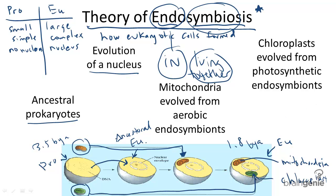Therefore, mitochondria and chloroplasts are considered to be modern day endosymbionts of what were originally thriving cells. The fact that they also have ribosomes and DNA similar to prokaryotic cells, and that they reproduce by fission independently from the rest of your cells, strongly supports this endosymbiont theory.